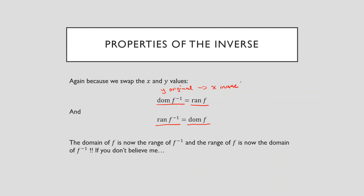So the x values of the inverse are the y values of the original, and the x values of the original turn into the y values of the inverse. And that's why the domain of the inverse is equal to the range of the original, and the range of the inverse is equal to the domain of the original.